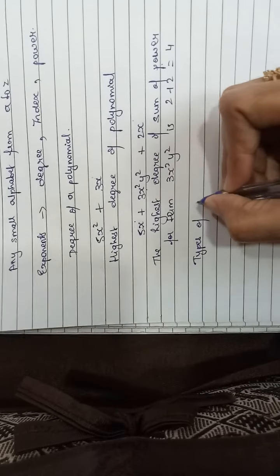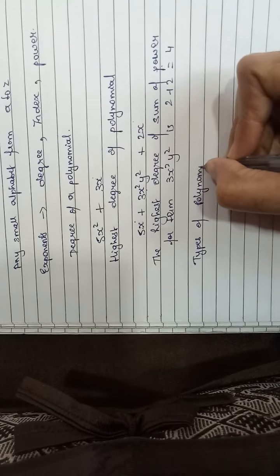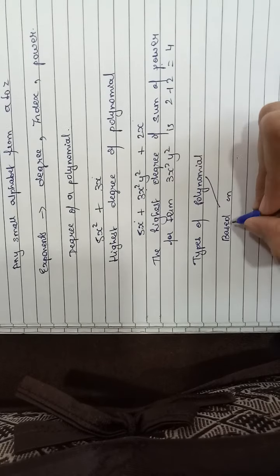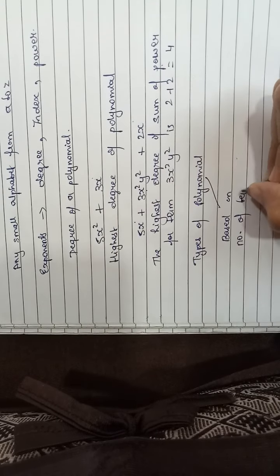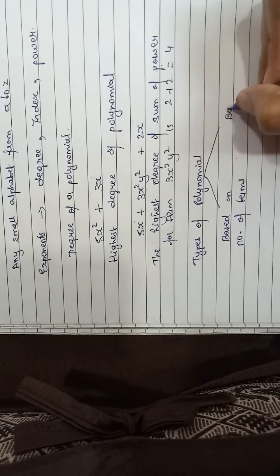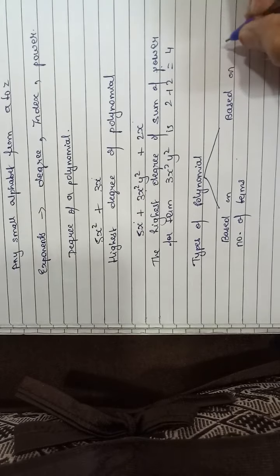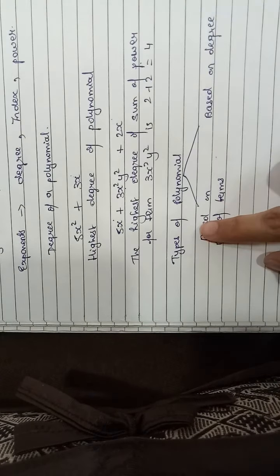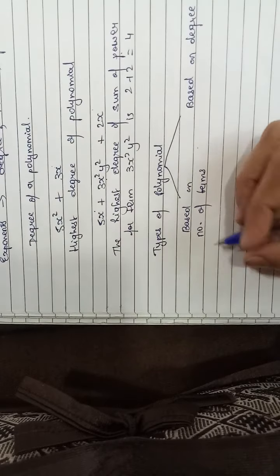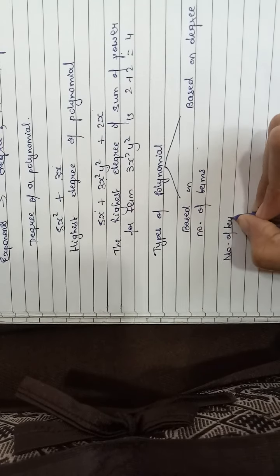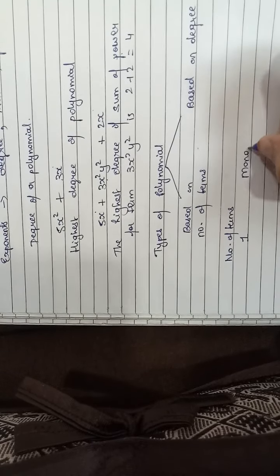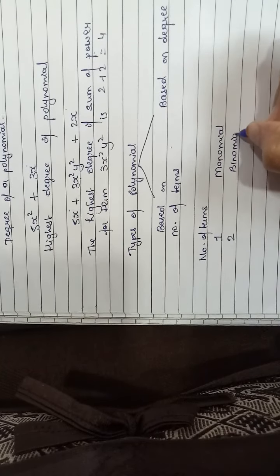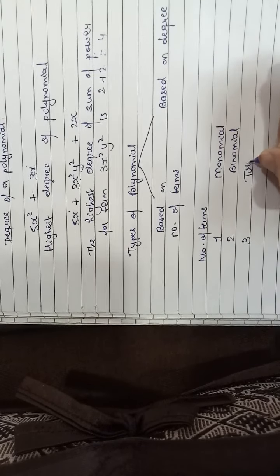Types of polynomial. There are 2 types: first, based on number of terms, and second, based on degree. Based on number of terms: if there is 1 term it is a monomial; if there are 2 terms it is a binomial; and if there are 3 terms it is a trinomial.